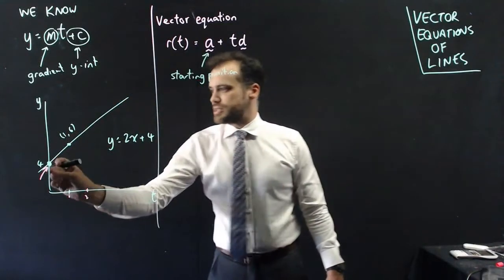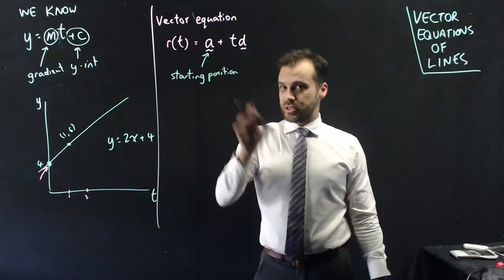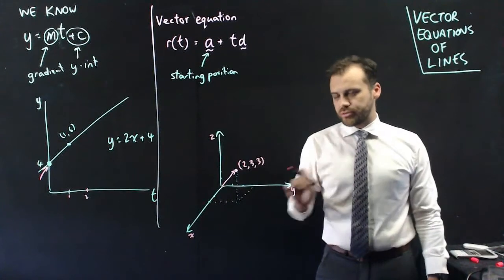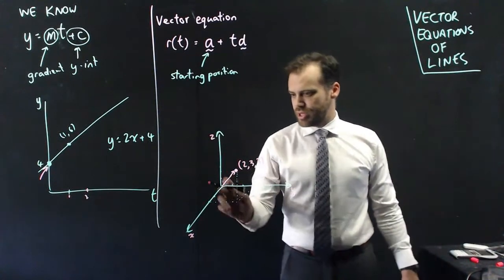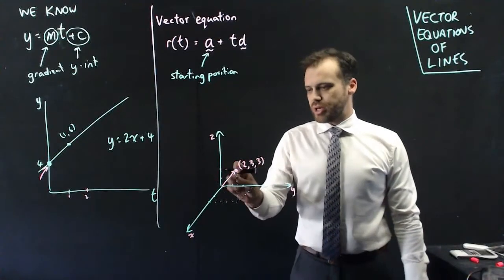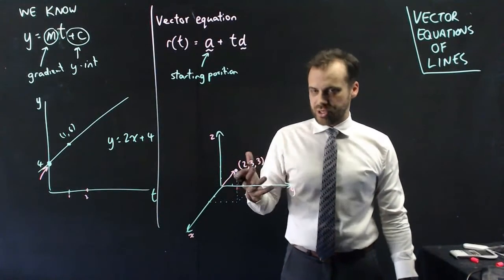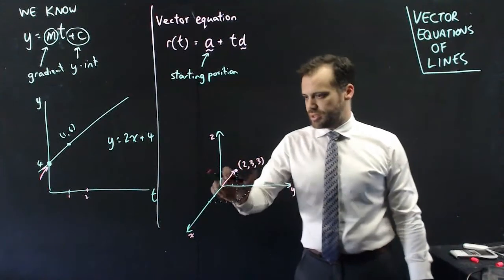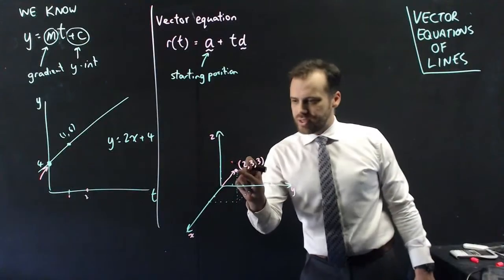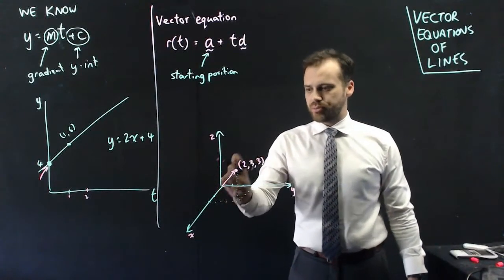Just like c was our starting position in the Cartesian form, the vector a is going to be our starting position as well. This really shines in three dimensions, so let's work in three dimensions. The point (2, 3, 3) can be described with the position vector 2i plus 3j plus 3k — that's out 2, across 3, and up 3. This dot is our starting position, shown using that position vector.